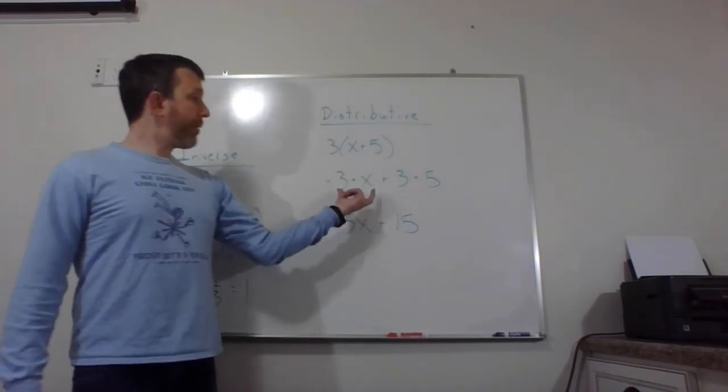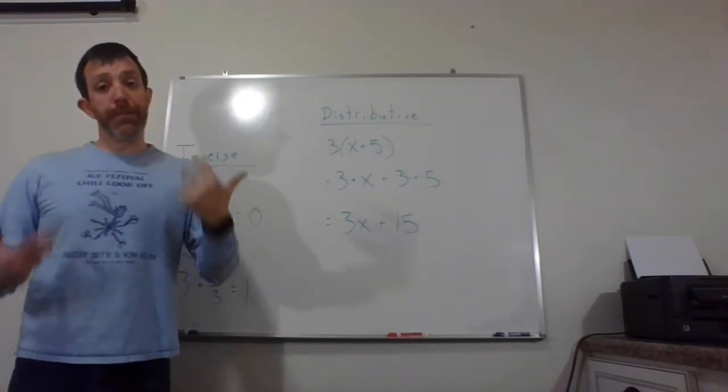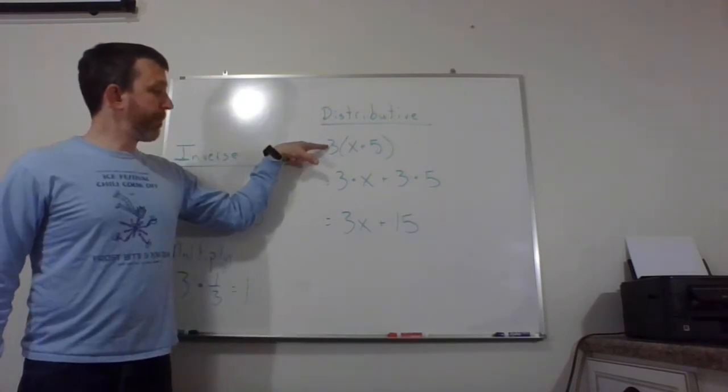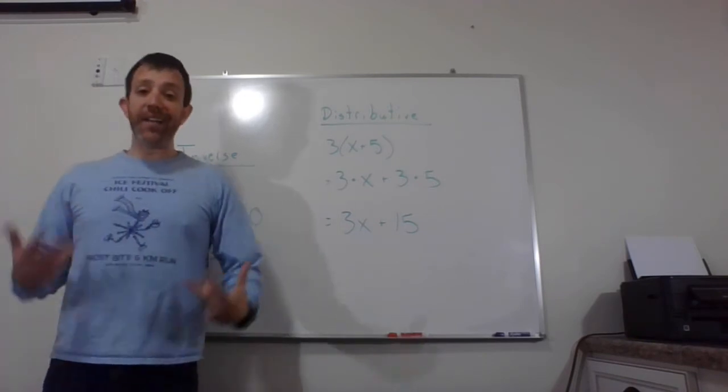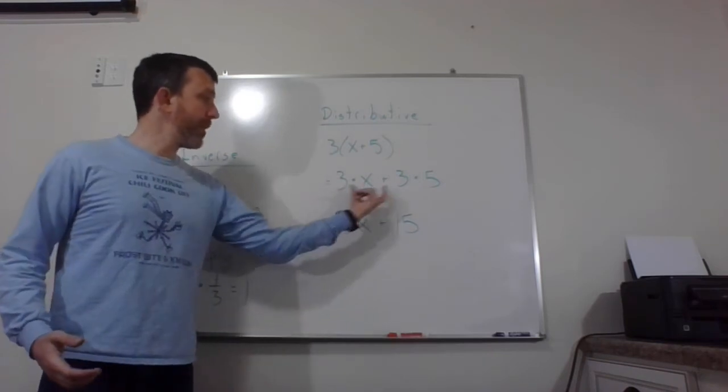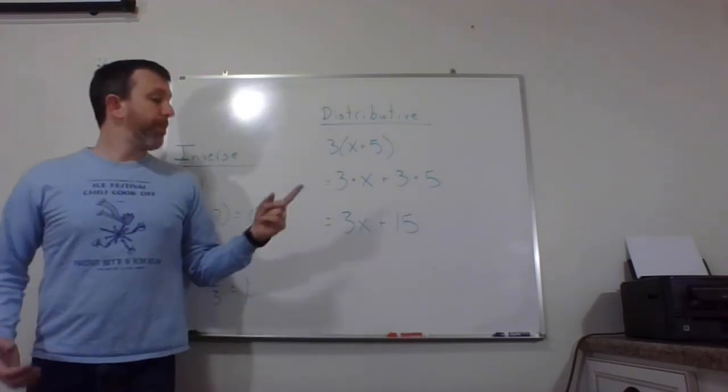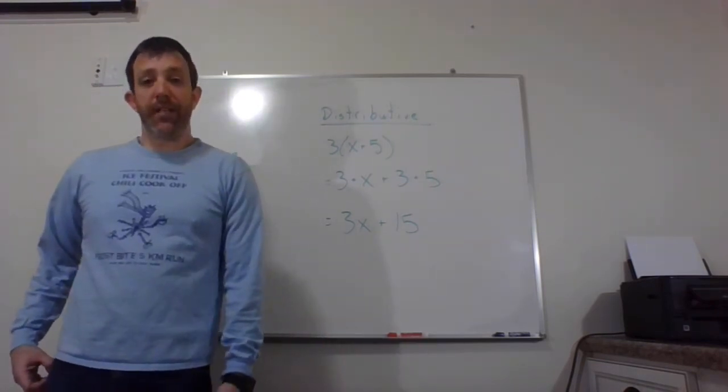So once we do that, three times x is 3x and three times five is 15. And to be perfectly honest, most people skip from the very beginning here to the last step. The middle step gets left out. I like to put it in there at least once to show everybody what is actually happening. We're taking this number on the outside and multiplying it by both parts. But you're more than welcome to skip right down to here because it's not terrible.